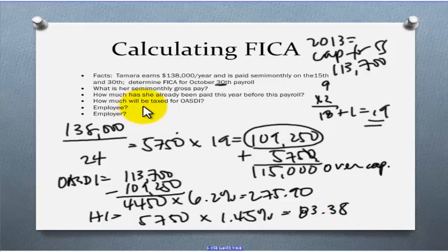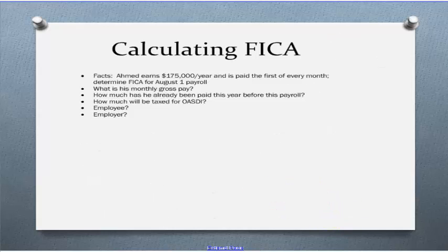That's how much the employee is going to get taxed on and the employer is going to get taxed on the same amount. The employee will have $275.90 withheld from their paycheck and also $83.38. The employer will have to pull out of their own pocket $275.90 for OASDI and $83.38. Alright, let's look at one more example.